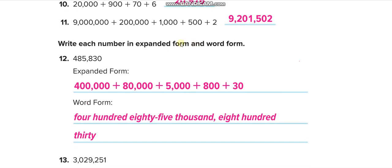Write each number in expanded form and word form. Example: 400,000 + 80,000 + 5,000 + 800 + 30 — nothing in the ones. This is the expanded form. In word form, reading it: four hundred eighty-five thousand, eight hundred thirty.